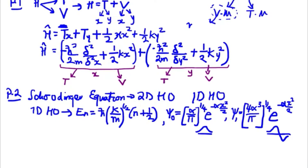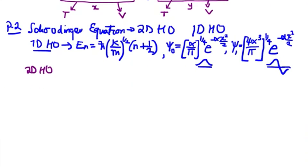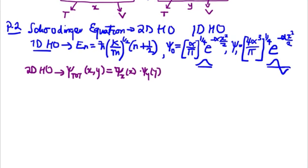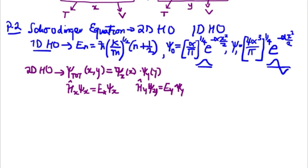Now we need to consider how to extend this to the two-dimensional harmonic oscillator. For the two-dimensional harmonic oscillator, the total wave function depends on both x and y, but we separate them according to the separability theorem — treating each variable independently. We multiply the x and y wave functions together. For the Hamiltonian operator, we must separate the x terms from the y terms, which generates the two-dimensional separability theorem discussed in the previous video.